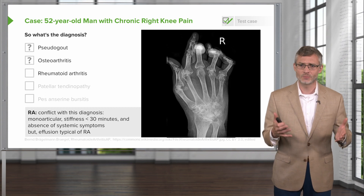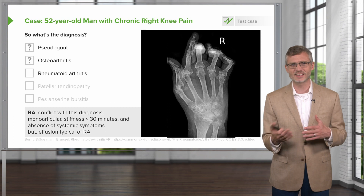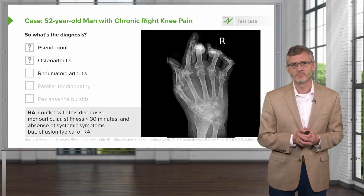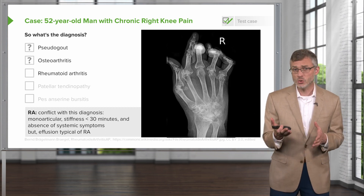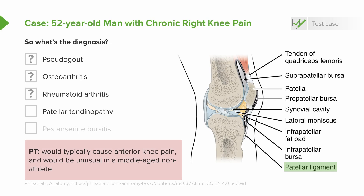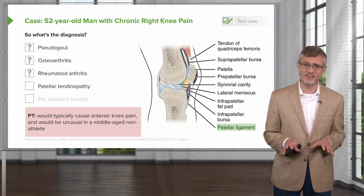Next up, rheumatoid arthritis. We need to consider it, though several things conflict with that diagnosis: it's monoarticular, and we tend to expect symmetric findings. He's only stiff for 15 minutes in the morning — we'd want to see stiffness for 30 minutes to nearly an hour. We also have no systemic symptoms at all. The effusion, however, would be pretty typical of rheumatoid arthritis, so we'll keep it on the list. Next, patellar tendinopathy — also known as jumper's knee — is inflammation and swelling of the tendon attaching the distal patella to the tibial tuberosity. It's typically an overuse injury, most common in athletes, and would cause anterior knee pain rather than medial knee pain, making it pretty unusual in a middle-aged non-athlete. So we can take that one off the list.